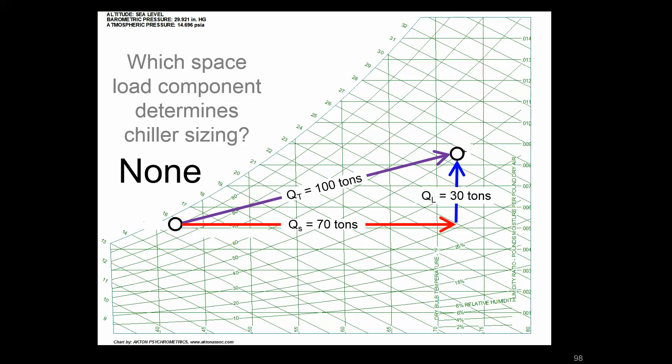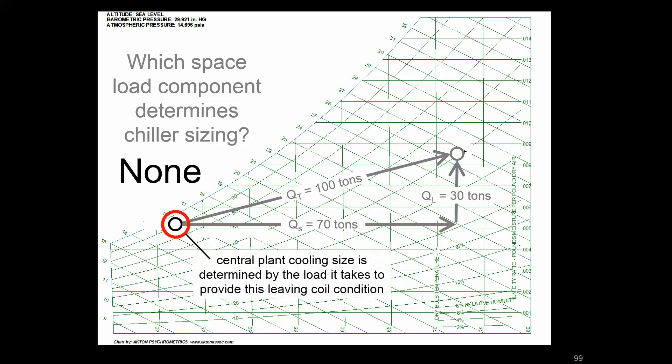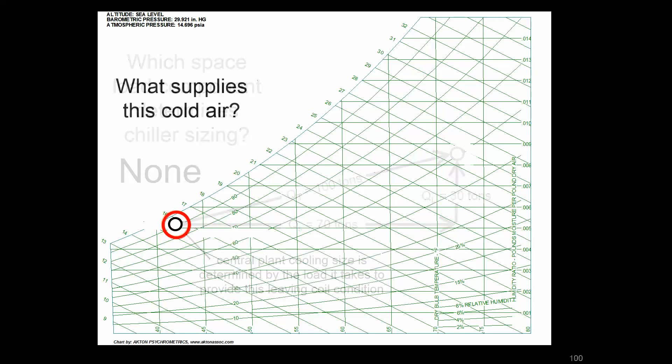For sizing of equipment in the plant, it's going to be whatever that heat exchanger, in this case a cooling coil, sees on the other side of it. And that may be dissociated a little bit from the zone load and that process. So really, central plant equipment is going to care about, in this case for a cooling coil, what's supplying this cold air. So let's take a look at that.